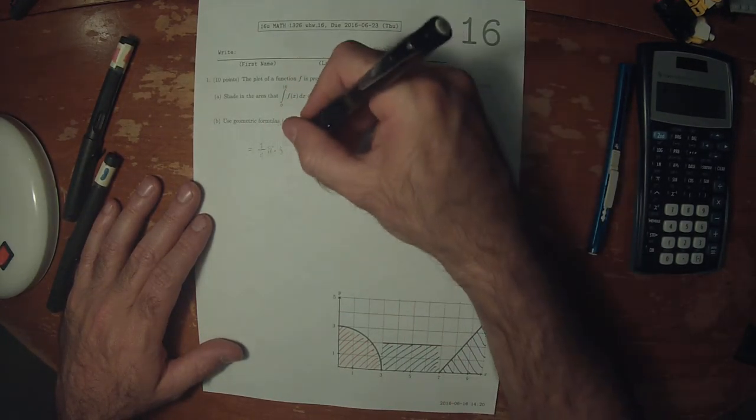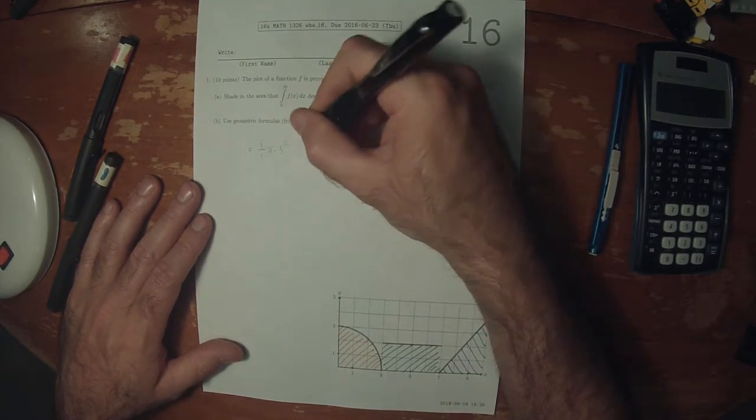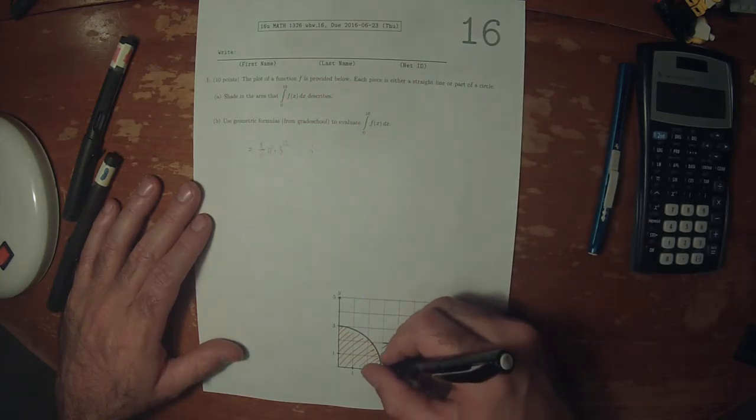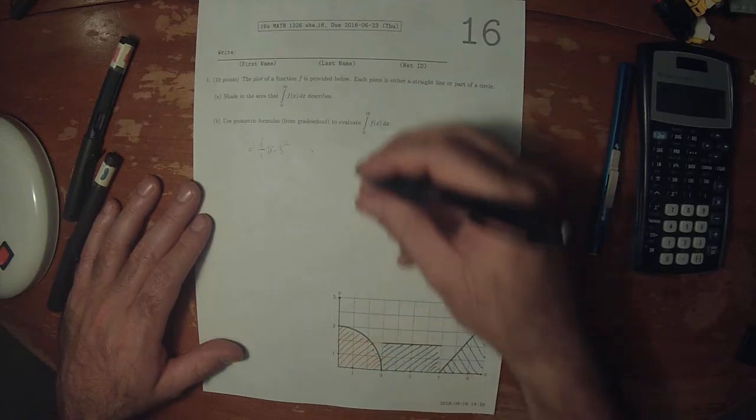plus this rectangle. That would be base, which is four times height, which is two.